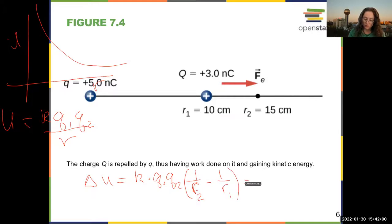So 9 times 10 to the 9 newton meters squared per coulomb squared, that's newton meters squared per coulomb squared...